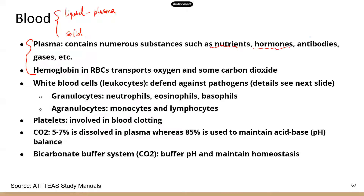Plasma also transports hormones. Think about this — hormones are for long-distance cellular communication, so in order for hormones to reach a target organ far away, they need to be transported long-distance, and the blood is the perfect system for that. Plasma also contains antibodies, which are proteins commonly found dissolved in plasma — a great system to transport antibodies throughout your body to fight pathogens.